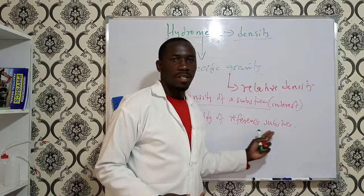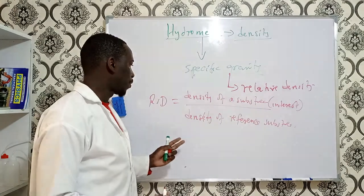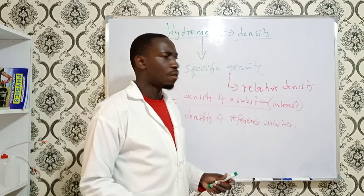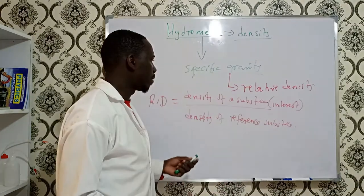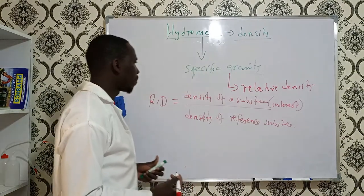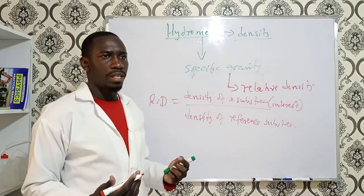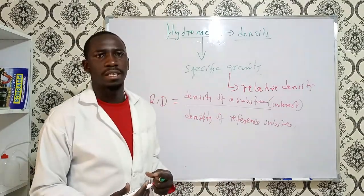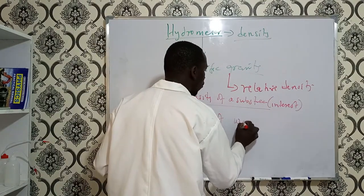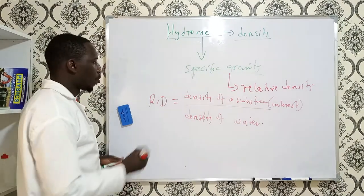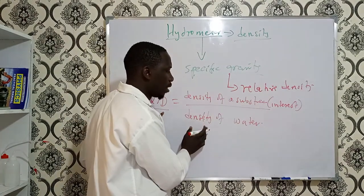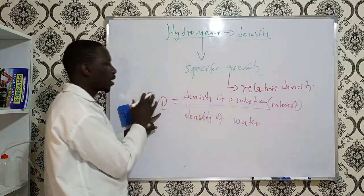To find the relative density, we must have a reference substance. In IGCSE, for example in the 844 syllabus, we use water as the reference, because the density of pure water is about 1.0 grams per cubic centimeter. So instead of writing 'reference substance,' we write 'density of pure water.'